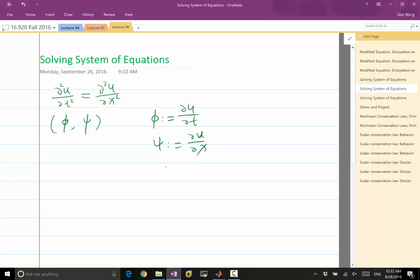So, first of all, just by their definition, we know that partial psi partial t is equal to the partial square of u partial x partial t. Just by definition of psi, which is actually equal to partial phi partial x, also by the definition of phi. So that's one equation we obtained through the definition.